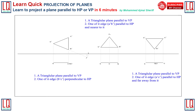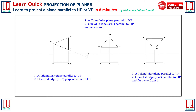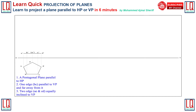For similar cases we obtain the front view and top view as shown when the plane is kept parallel to VP. When a pentagonal plane is kept parallel to the horizontal plane with one of its edges BC parallel to VP and far away from it, two edges AE and ED make equal inclination to the vertical plane. When the pentagonal plane is viewed from the front view, we obtain a straight line.